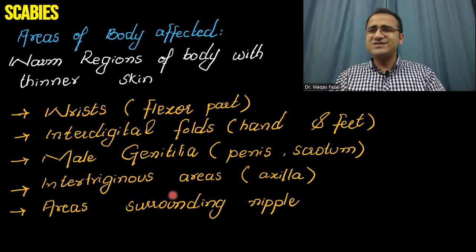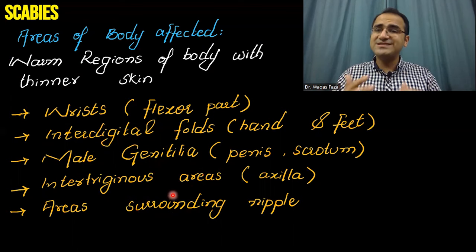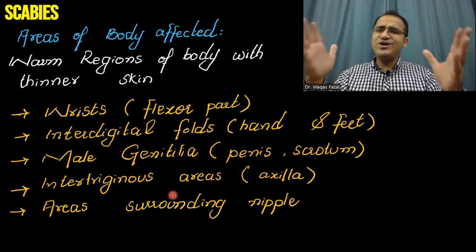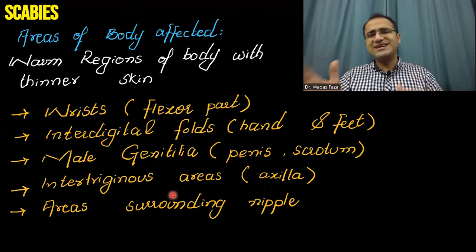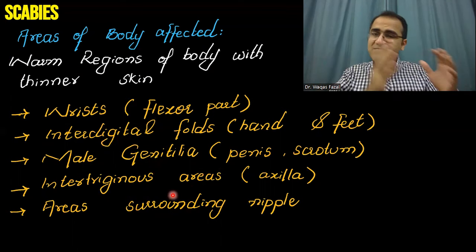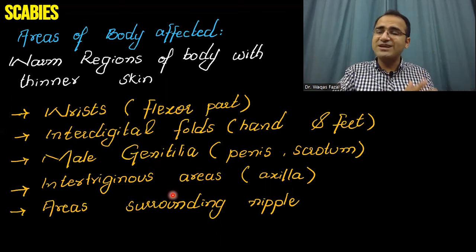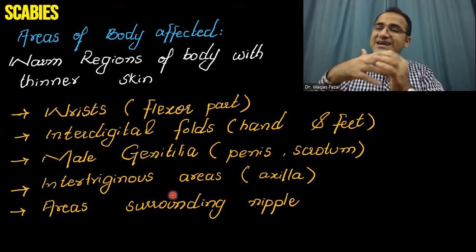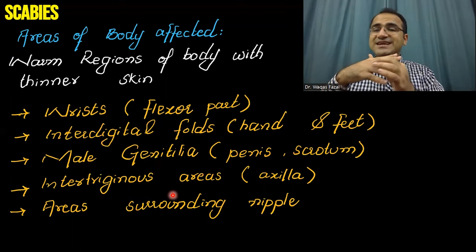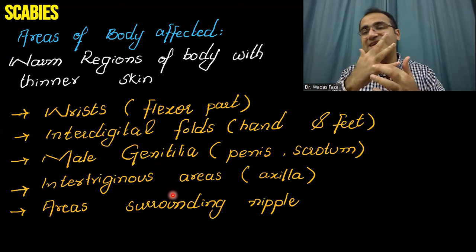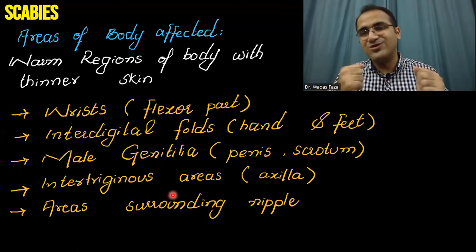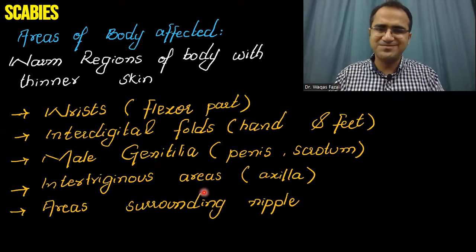The classic exam scenario is: a patient presenting with severe itching — especially at night — where family members are also having itching, and the itching is mainly in the axilla, the genital area, and the interdigital folds. This is the classical presentation of scabies.